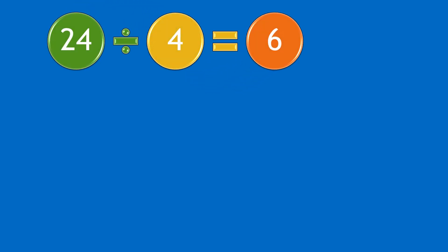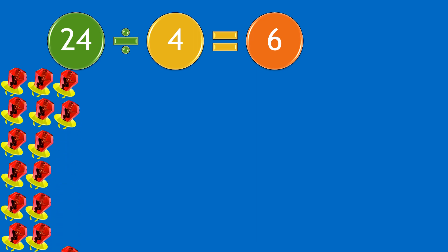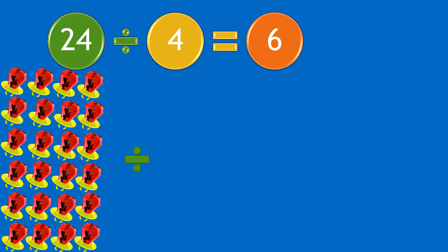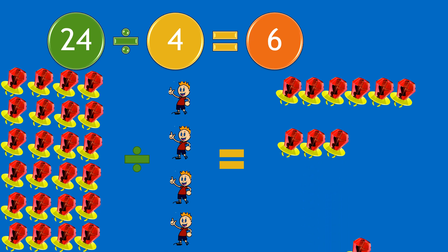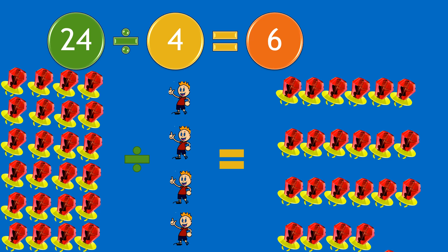Moving on to our next question: 24 divided by 4 equals 6. If you have 24 ring pops and divide them by four boys, each boy will receive six ring pops. Yep, each boy has received their six ring pops.